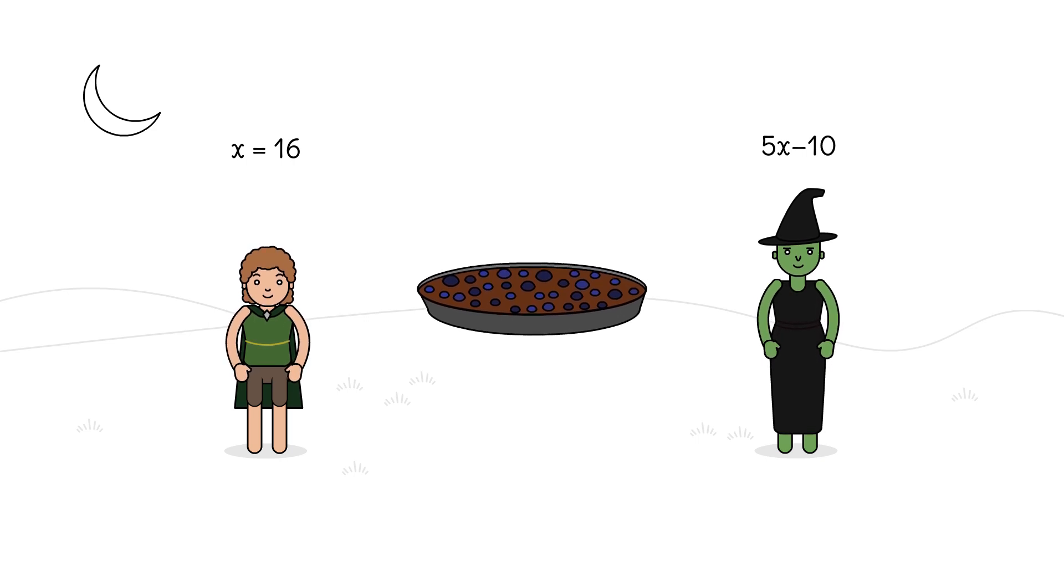Remember, we use order of operations to evaluate expressions, and we reverse operations to solve equations. But wait, where did Devon get those 16 blueberries from? Was this giant blueberry tart just a midsummer night's dream?